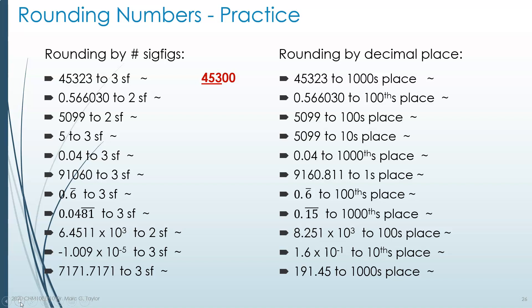Note: whenever you round a number — either by sig figs or decimal place — your new answer should be similar to your old answer. For instance, 453 is nowhere close to 45,323, but 45,300 is pretty close to 45,323. So your little check at the end is: is my answer close to my old number, or is it completely different?